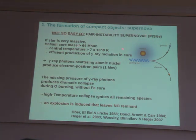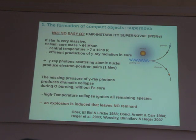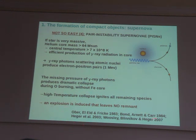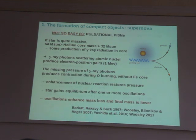While core collapse supernova is expected to leave a remnant, pair instability supernova is expected to leave no remnant. It happens only for very massive stars with a helium core larger than 64 solar masses. Unlike core collapse supernovae, the pair instability supernova is a well-known physical mechanism. When I described core collapse supernova, the word I used most was 'uncertain.' For pair instability supernovae, the basic physics is well known — you can find it in published papers — which means we can get some solid results from this mechanism.